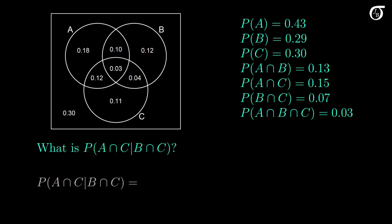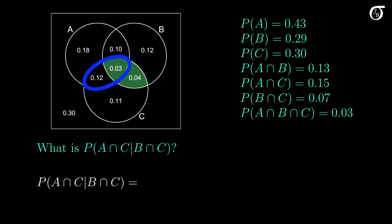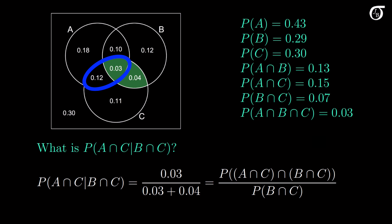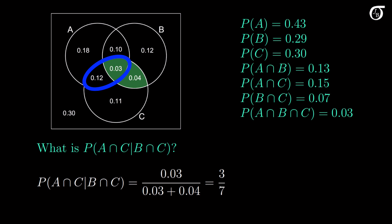Back to the question: what is the probability of A intersect C given B intersect C? Since we are given B intersect C, that reduces our sample space down to the green region — the BC intersection. Within that green region, only the three-way intersection is also in A intersect C. So the probability of A intersect C given B intersect C is 0.03 over 0.03 plus 0.04. This is exactly what the conditional probability formula tells us: the numerator is the three-way intersection and the denominator is the probability of B intersect C. The final answer is 3 over 7.